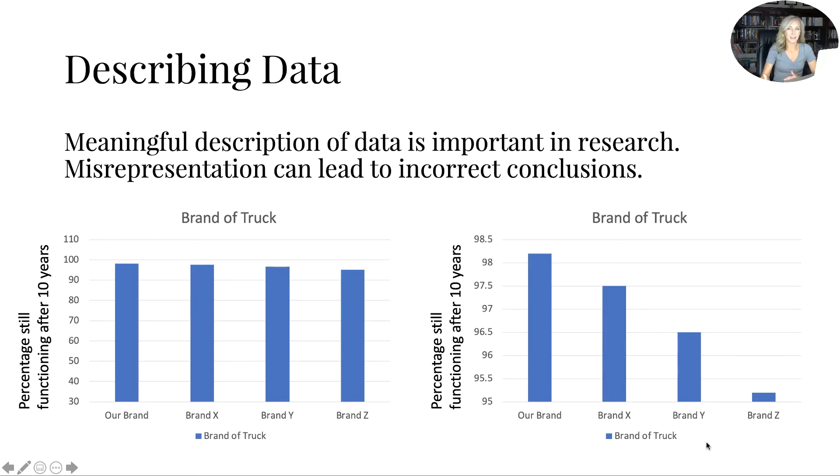So describing data is really the first step that statistics takes for us. So meaningful description of data is important in research, just describing what it's saying. So misrepresentation can lead to incorrect conclusions. So if you look at these two graphs, these are telling us the exact same thing. But the first graph says, oh, there's really no difference. But if we zoom in on it, wow, brand Z sucks, right? There can definitely be some misleading information there.